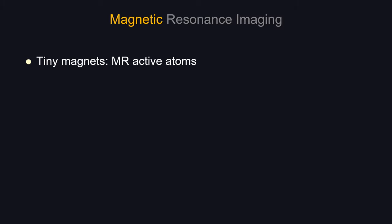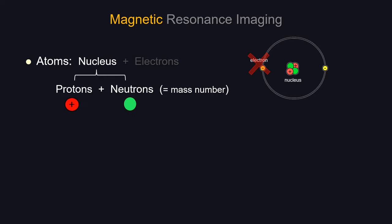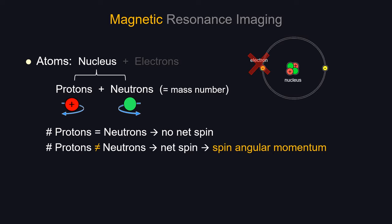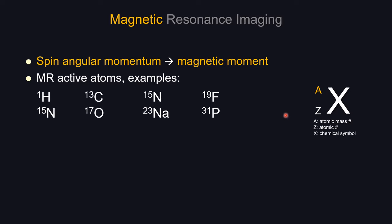The tiny magnets are MR active atoms. An atom comprises a nucleus and electrons — electrons don't contribute much to MR imaging. The nucleus contains positively charged protons plus neutrons. Imagine protons spinning one direction and neutrons in the opposite direction. If you have the same number of protons and neutrons, their spins cancel each other out — no net spin — and that atom is not MR active. On the other hand, if you have an unequal number of protons and neutrons, the spins don't cancel, giving you a net spin and spin angular momentum. For board exams, the MR active atom has an odd atomic mass number.